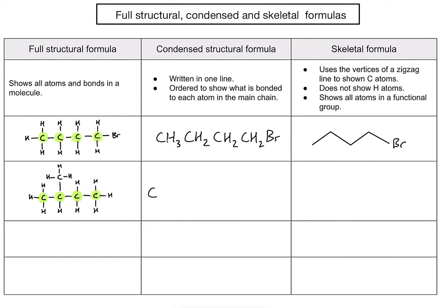The first carbon has three hydrogens: CH3. The second carbon has one hydrogen and a methyl group sticking off the side, so I write CH and then in brackets CH3. The brackets indicate that methyl group is not part of the main chain. The third carbon has two hydrogens, and the fourth has three hydrogens. Again, this saves time and gives all the information needed to understand the structure.